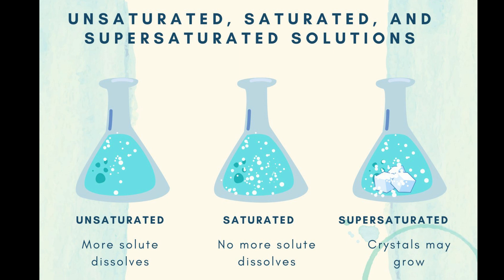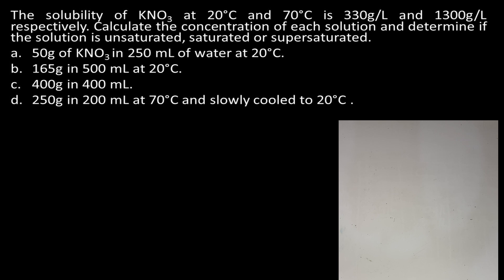Now let's work on a problem. The solubility of potassium nitrate at 20 degrees Celsius is 330 grams per liter, and at 70 degrees Celsius it is 1,300 grams per liter. Calculate the concentration of each solution and determine if it is unsaturated, saturated, or supersaturated. Part A: 50 grams of KNO₃ in 250 milliliters of water at 20°C. Part B: 165 grams in 500 milliliters at 20°C. Part C: 300 grams in 400 milliliters at 20°C. Part D: 250 grams in 200 milliliters at 70°C, slowly cooled to 20°C.